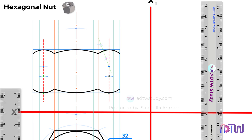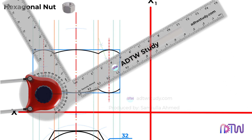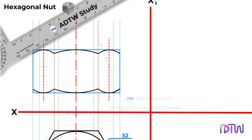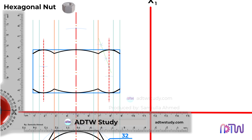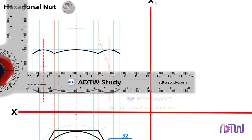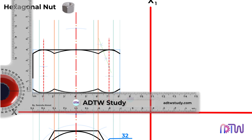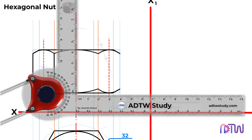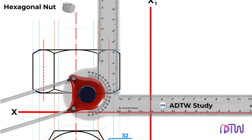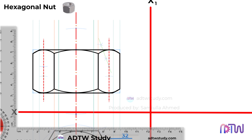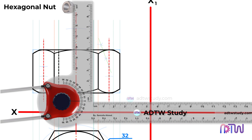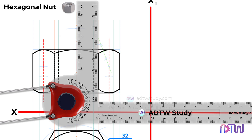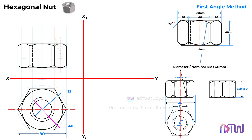After this, adjust the drafter to 30 degrees and draw the edges of the nut. After this, draw the horizontal lines as shown. In the end, we will complete the nut by drawing the internal threads, which are represented by vertical dotted lines. This completes the front view of the hexagonal nut.